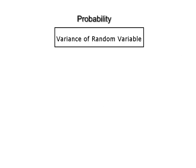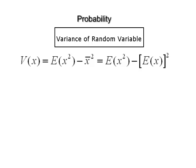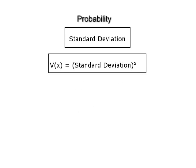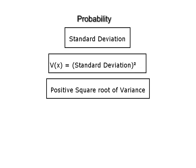Variance of a random variable. Variance of X is given by V(X) = E(X²) − (X bar)² = E(X²) − [E(X)]², where E(X) = Σ X · P(X) and E(X²) = Σ X² · P(X). V(X) is the square of standard deviation; in other words, standard deviation is the positive square root of variance.